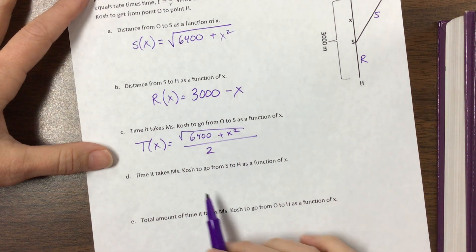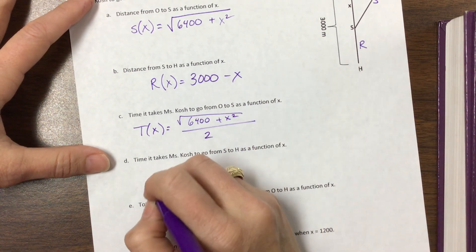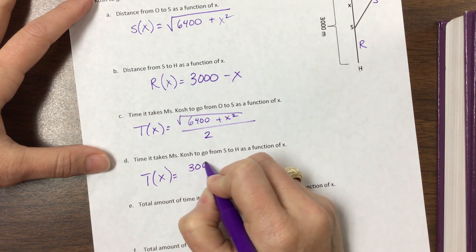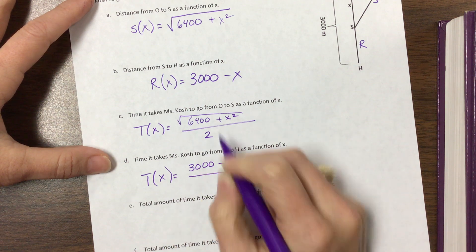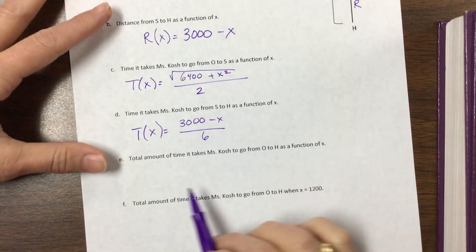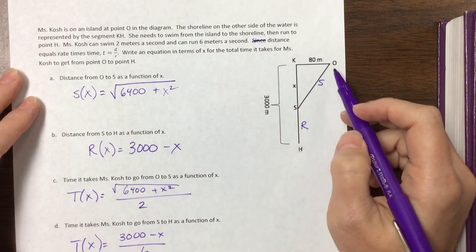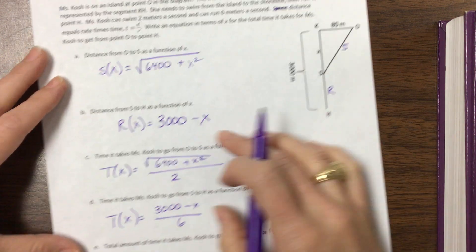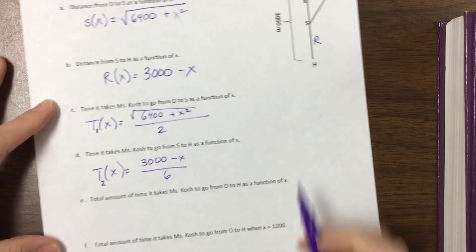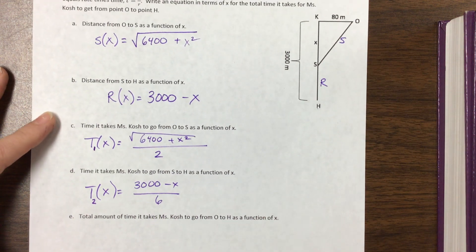Okay and then it says the next one is the time it takes me to run. So time as a function of X for that part of the journey is going to be this distance divided by my rate for running, which is now 6 meters per second. And the total amount of time from O to H, I'm gonna have to first start here, do the swim part, do the run part.